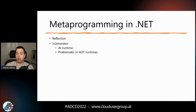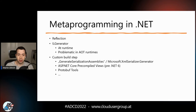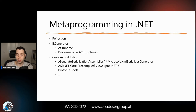IL emit is used in combination with reflection to generate code — for example, XmlSerializer has done this for over 20 years to make serialization faster. This is more problematic in modern ahead-of-time compiled runtimes for IoT or iOS devices where you can't ship IL compilers. We've also had custom build steps — for instance, XmlSerializer's 'generate serialization assemblies' checkbox, and ASP.NET Core pre-compiled views worked this way before .NET 6.